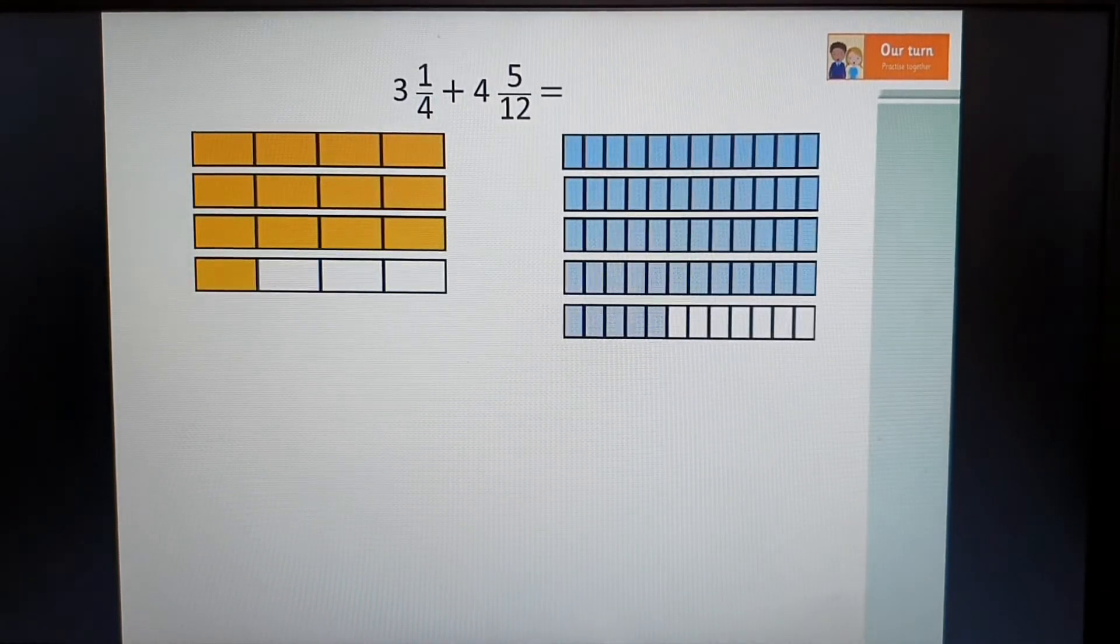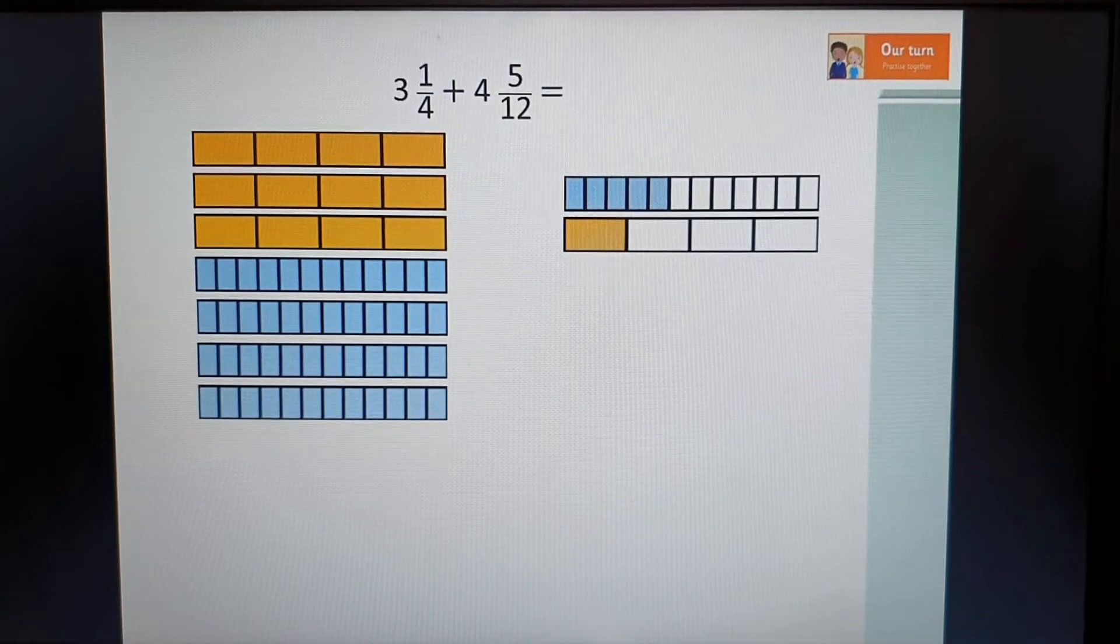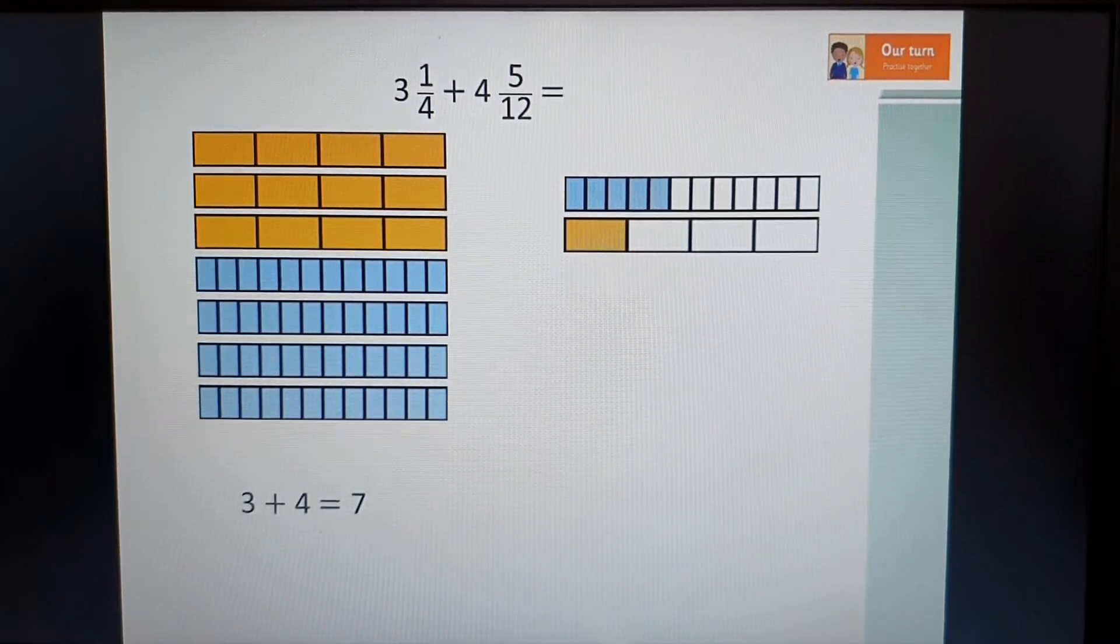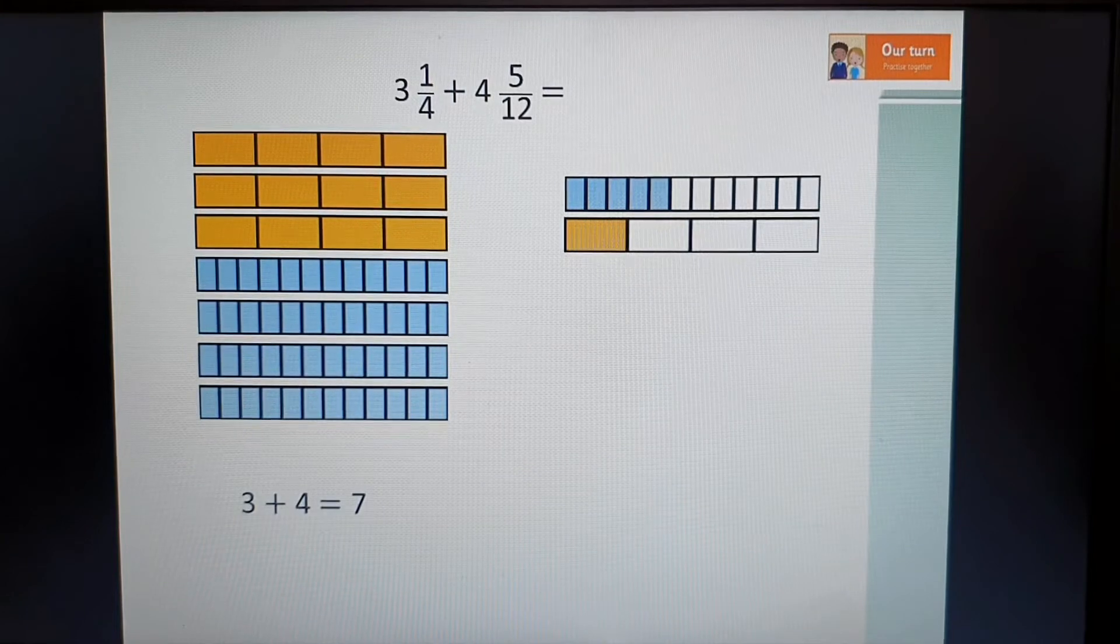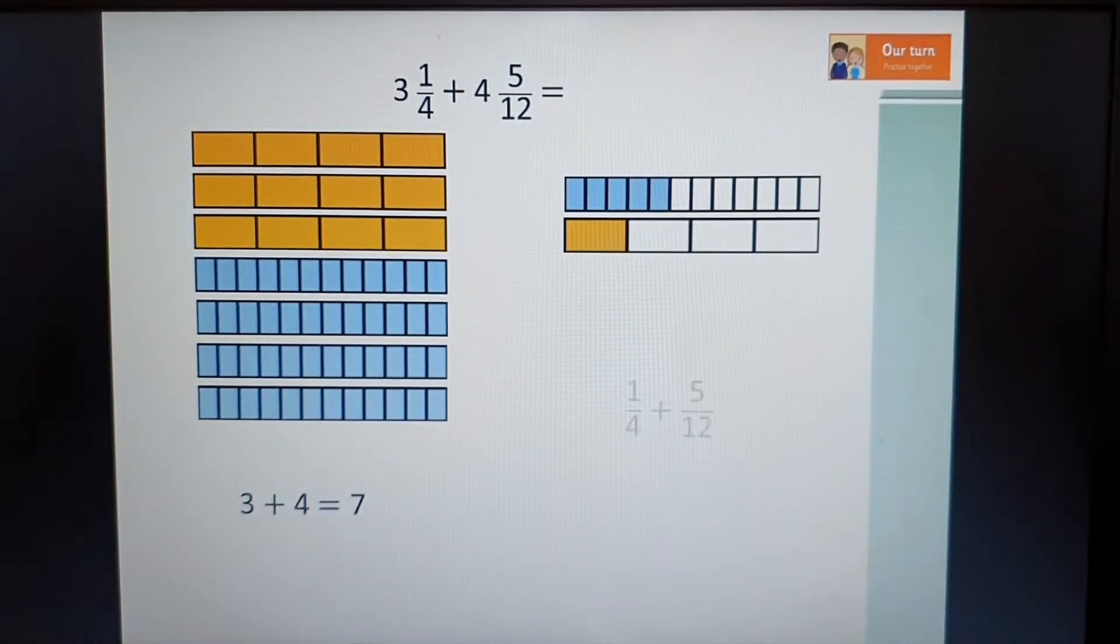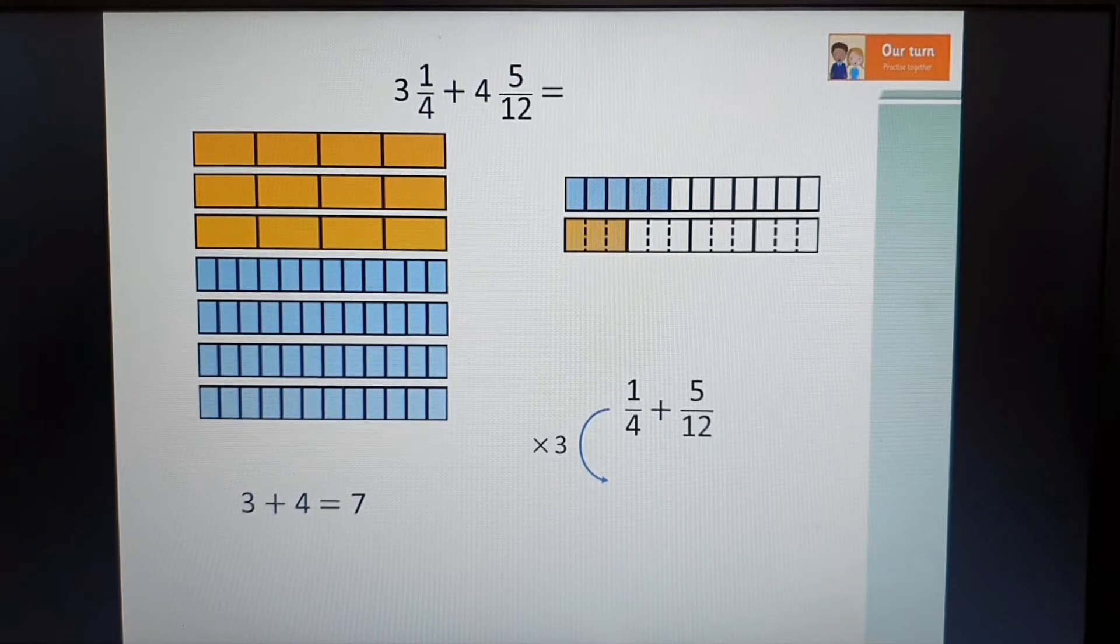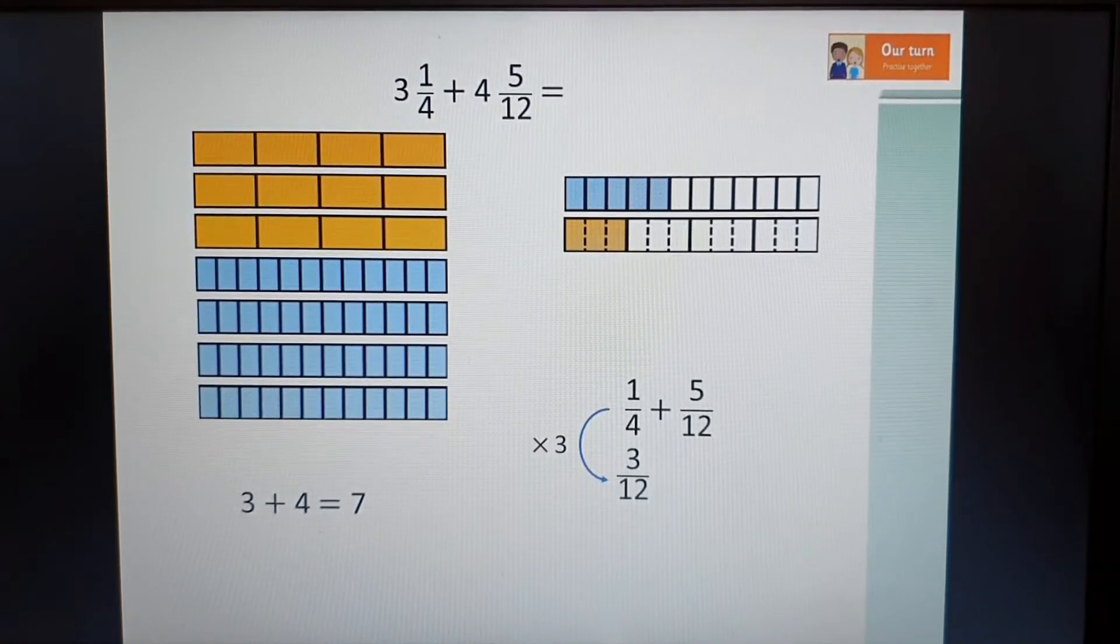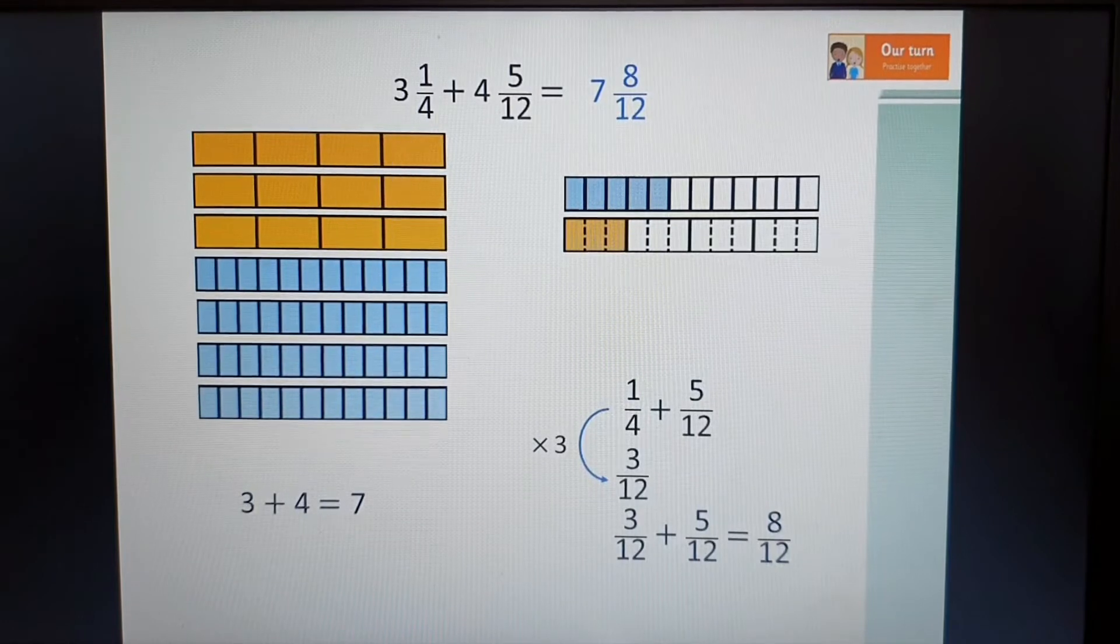We could have done it this way. I've drawn out two bar models to give you a bit of visualization. I'm going to add the whole numbers first. So I'm going to add the three and the four, which gives me seven. Now I've got to add the one quarter and the five twelfths. So I'm going to have to convert my quarter into twelfths. You can see above how much that one quarter, the yellow little piece over here is worth. I need to convert that fourths into twelfths. To do that, I multiply it by three. That will give me three twelfths. Now I can easily add those two fractions together. That'd be eight twelfths. Now I can add that with my seven and I'll have my answer.